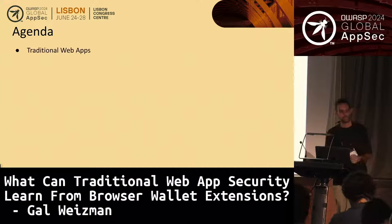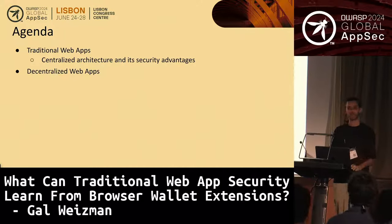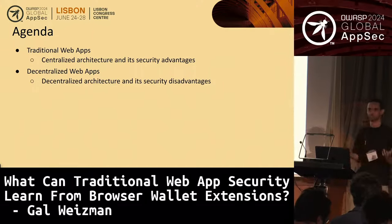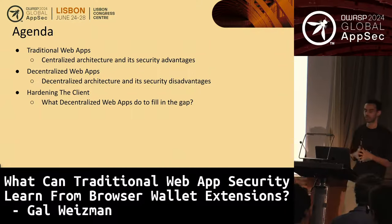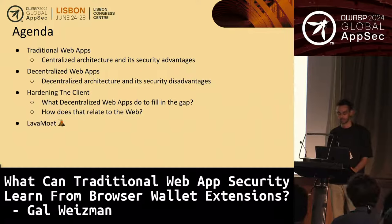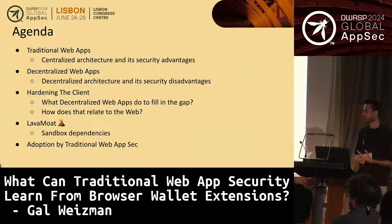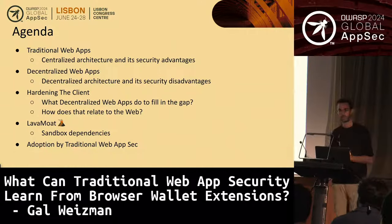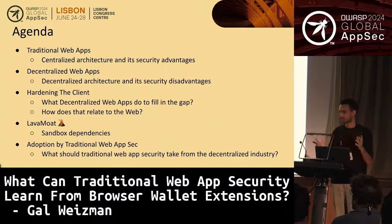Allow me to go through the agenda real quick. First, we're going to focus on traditional web applications and the centralized architecture and security advantages it has. We'll do the same for the decentralized world, talking about decentralized web applications and the security disadvantages they introduce. Then we're going to talk about how decentralized applications fill in the gaps security-wise. We'll also cover what this has to do with the web, leading us to a project called LavaMote, which is basically an interesting way to sandbox dependencies. We'll summarize by understanding whether traditional web app security can learn from these initiatives and adopt.